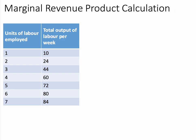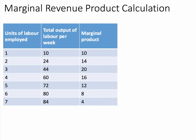Let's work through a numerical example — at any point you can press pause to gather your thoughts and take some notes. Here we have a firm employing extra units of labour from 1 through to 7, and we have information on the total output of labour per week. Total output goes up as we employ extra units, allowing us to calculate the marginal product. The marginal product is the additional output from employing one more worker: the first worker adds 10, the second adds 14, the third adds 20, and so forth.